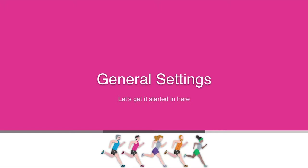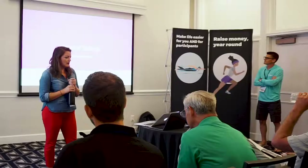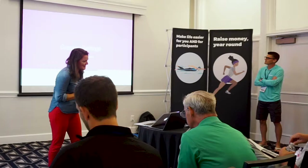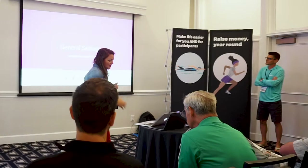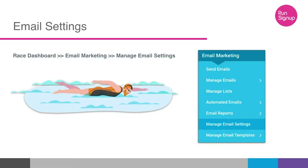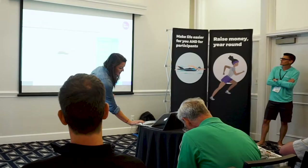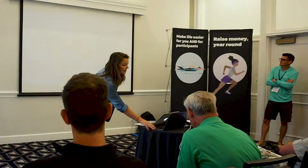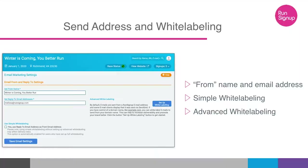The first place you start when getting your email marketing tools ready is the general settings — you have to set everything up. To get to your email settings, go to your race dashboard, then Email Marketing, then Manage Email Settings. You'll want to set up your send address — by default it's your race name, but you can make it a person's name or whatever you'd like. The email address defaults to what you set in the race wizard, and that's the reply-to address, which you can also change.